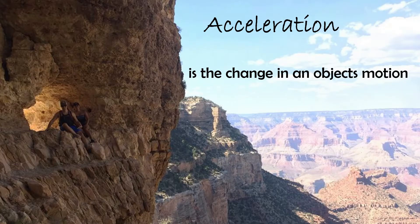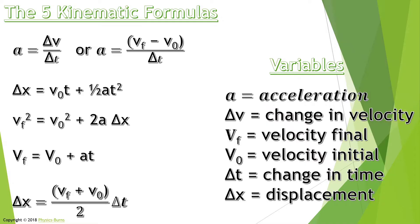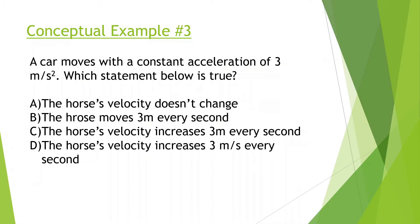Welcome to acceleration in AP Physics C. Let's go into our first problem: a car moves with a constant acceleration of three meters per second squared. A lot of people get confused by this because they wonder what 'seconds squared' means. Think of it differently — this is the same thing as three meters per second per second. The squared is short for seconds times seconds.